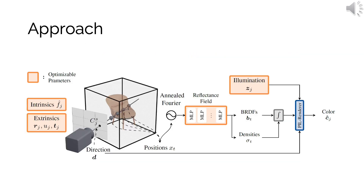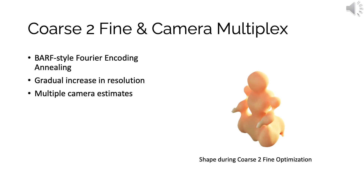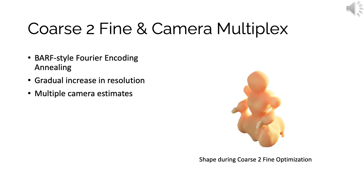In SAMURAI, we propose to jointly learn the camera poses, reflectance field, and illuminations. We solve this highly challenging and ill-posed problem with several novel additions. We use a coarse-to-fine optimization schedule inspired by the recent BARF technique and increase the resolution during training. We first learn the low-frequency shape and then gradually increase the resolution during training.